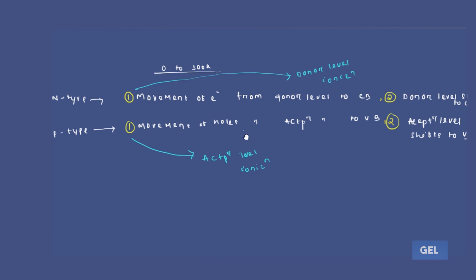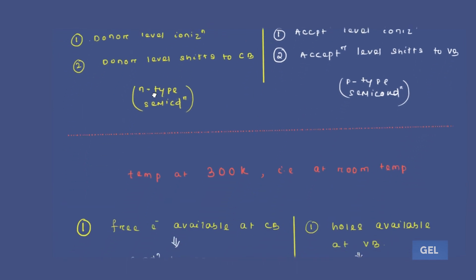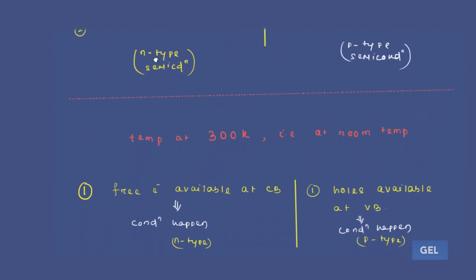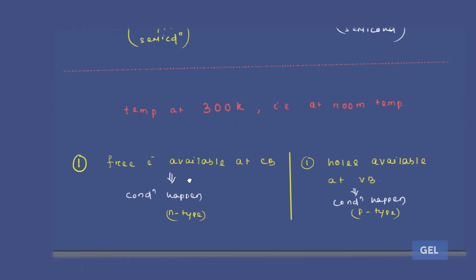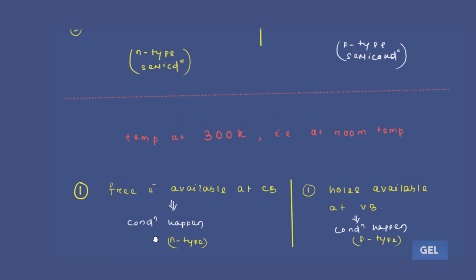At 300K, that is at room temperature, in the case of n-type semiconductor our free electrons are available at the conduction band, and in the p-type case our holes will be available at the valence band.